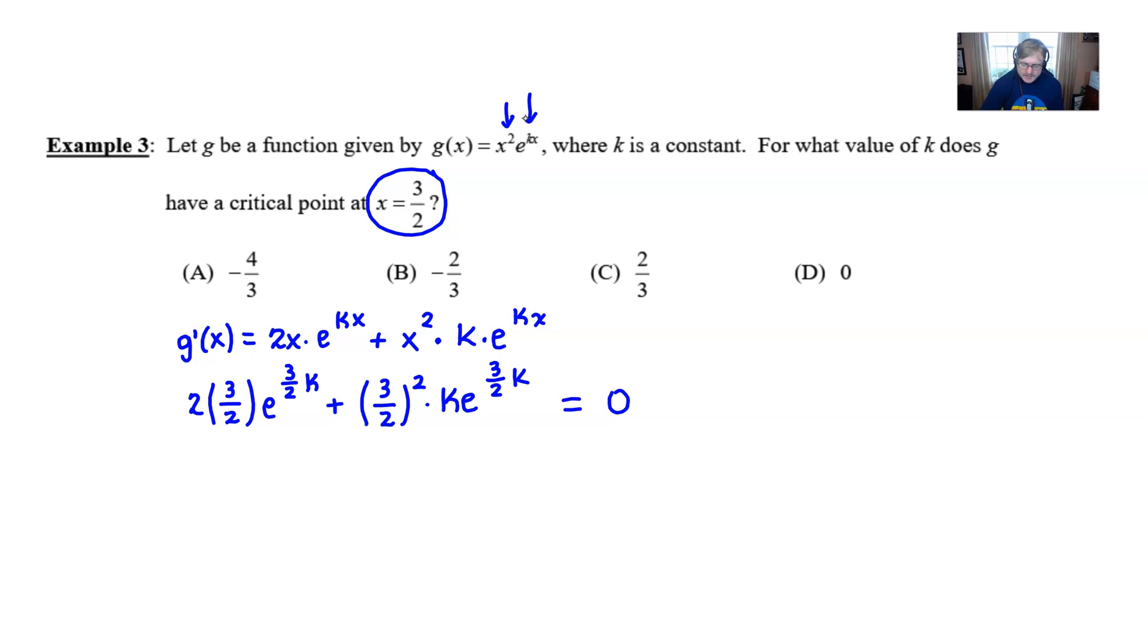Now what I'm going to do is a couple of things here. I'm noticing that I could factor out an e to the three halves times k power. And so I'm going to go ahead and make that happen and at the same time I'm going to simplify what's left.